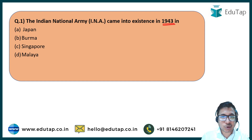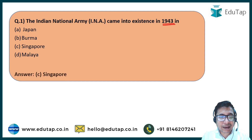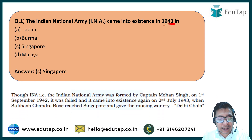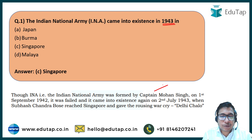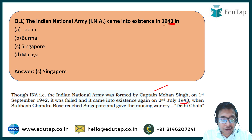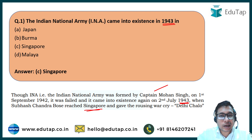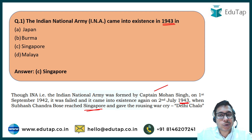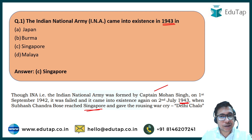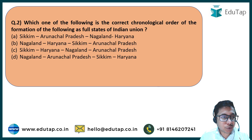The correct answer is Singapore. The INA was technically first formed by Captain Mohan Singh on 1st September 1942, but it failed and was relaunched by Subhash Chandra Bose in 1943. He reached Singapore, secured the release of Indian prisoners of war who had fought in the British Indian Army, enlisted them into the INA, and aimed to liberate India from the eastern side.